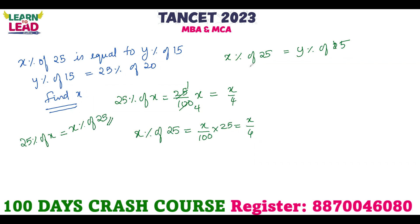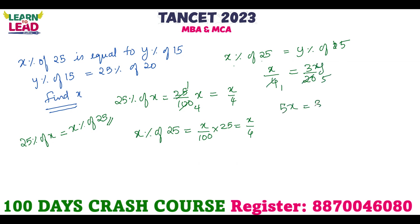x% of 25 simplifies to x/4. y% of 15 simplifies to 3y/20. 25% of 20 simplifies to 1/20 times... Setting x/4 equal to 3y/20: this gives 5x = 3y. This is equation 1.